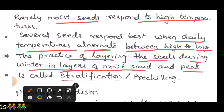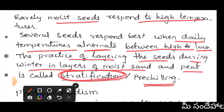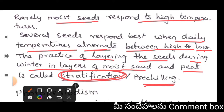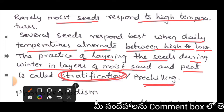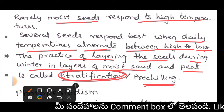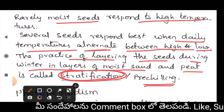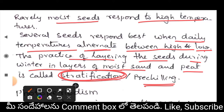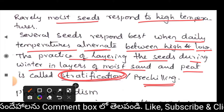This process of stratification is called pre-chilling treatment, involving alternating high and low temperatures. Seeds are layered in moist sand and peat to three layers under temperature conditions. Scarification and stratification are the two main methods: scarification addresses internal seed coat causes, while stratification uses temperature and moisture conditions.